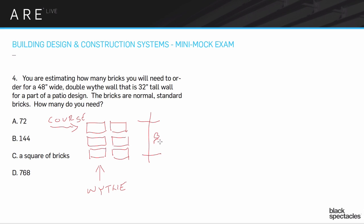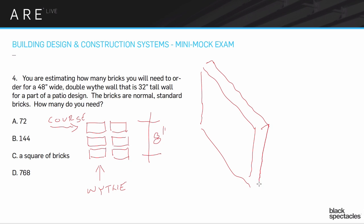Every three bricks in a standard run, when stacked together with their mortar beds, equals eight inches in height. So thinking about our wall: it's two wythes, 32 inches tall, and 48 inches long.